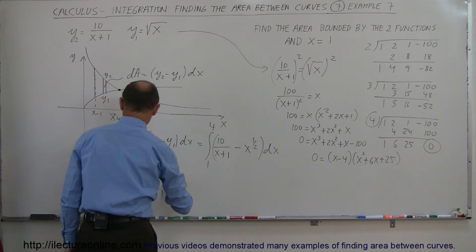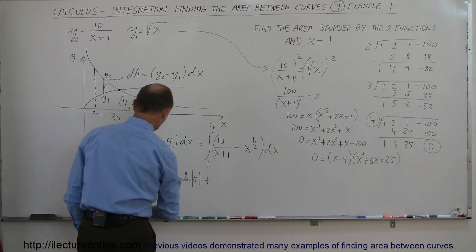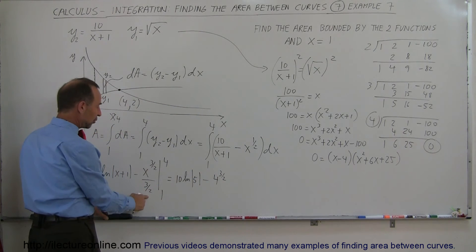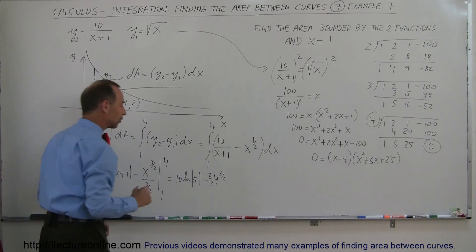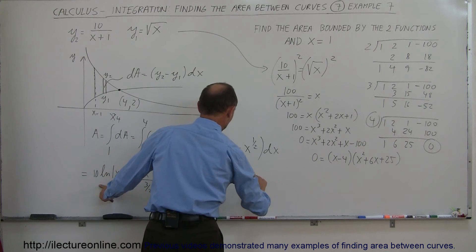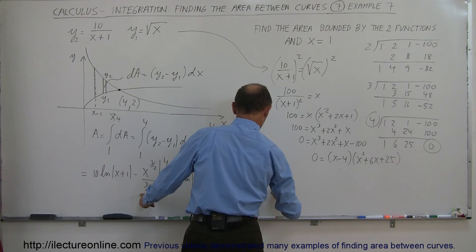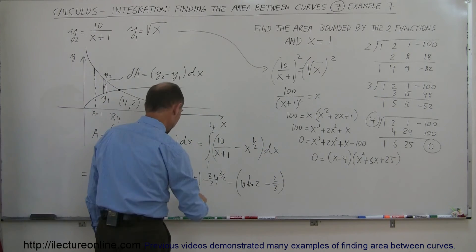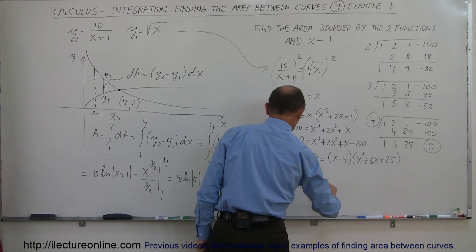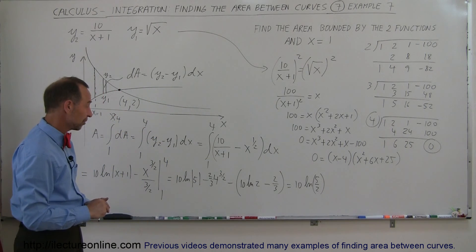Plugging in the upper limit x equals 4: we get 10 times the natural log of 5, minus two-thirds times 4 to the three-halves power. Plugging in the lower limit x equals 1: we subtract 10 times the natural log of 2, minus two-thirds times 1, which is simply two-thirds. So we have 10 ln 5 minus 10 ln 2, and since the natural log of 5 minus the natural log of 2 equals the natural log of 5 over 2, this simplifies to 10 times the natural log of five-halves.